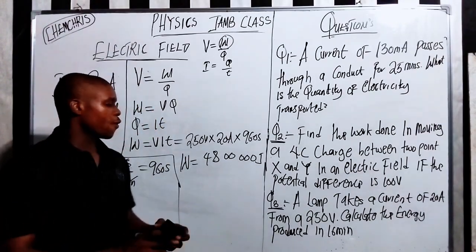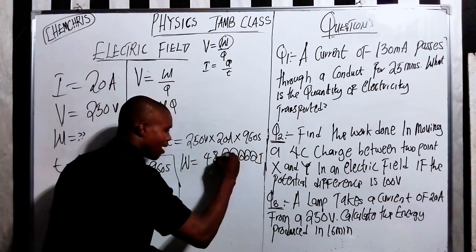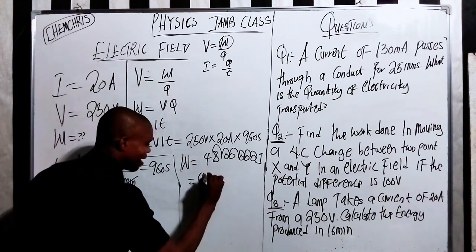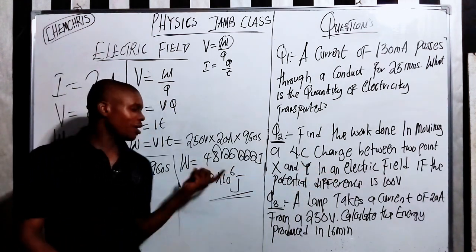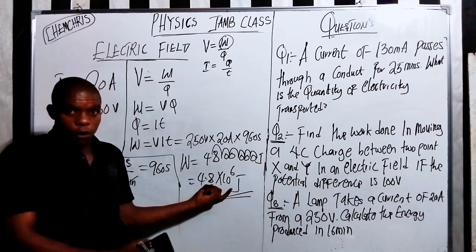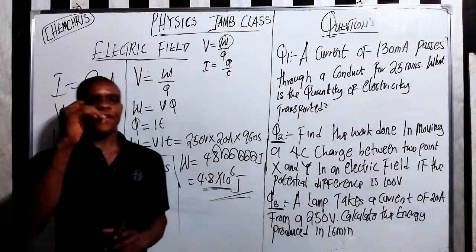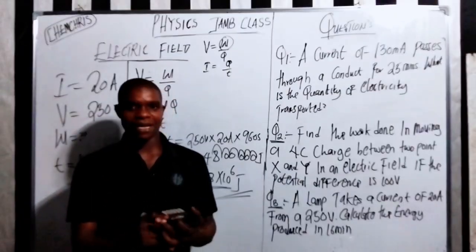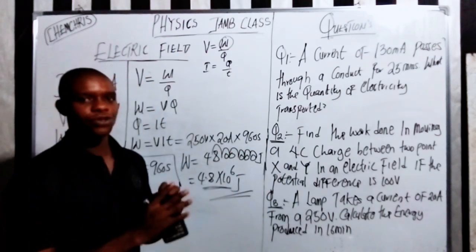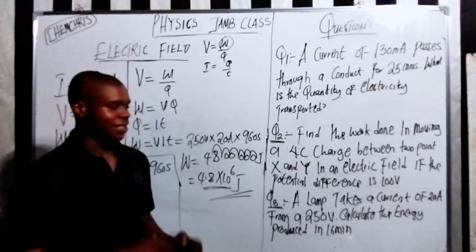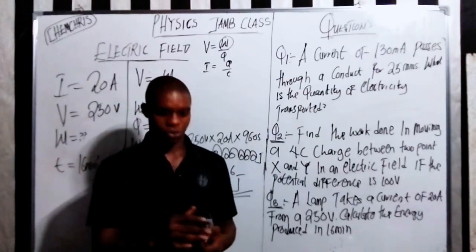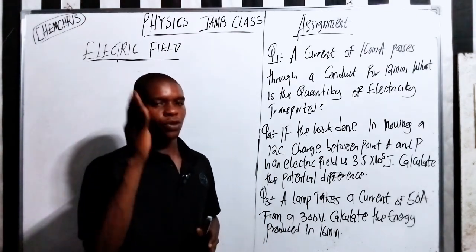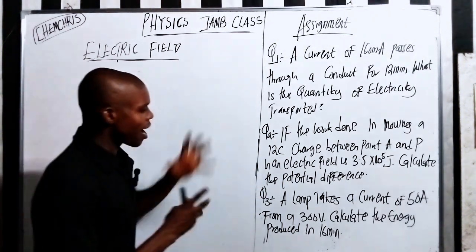So W equals 4,800,000 joules. Converting to standard form: W equals 4.8 times 10 to the power of 6 joules. When you get a large value, convert it to standard form — that is scientific notation. It's very important. Now it's time for you to try your own questions.